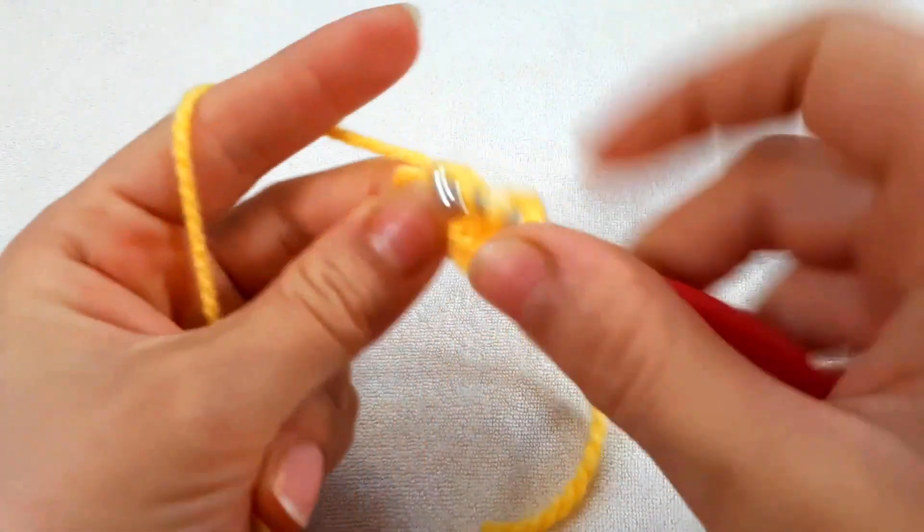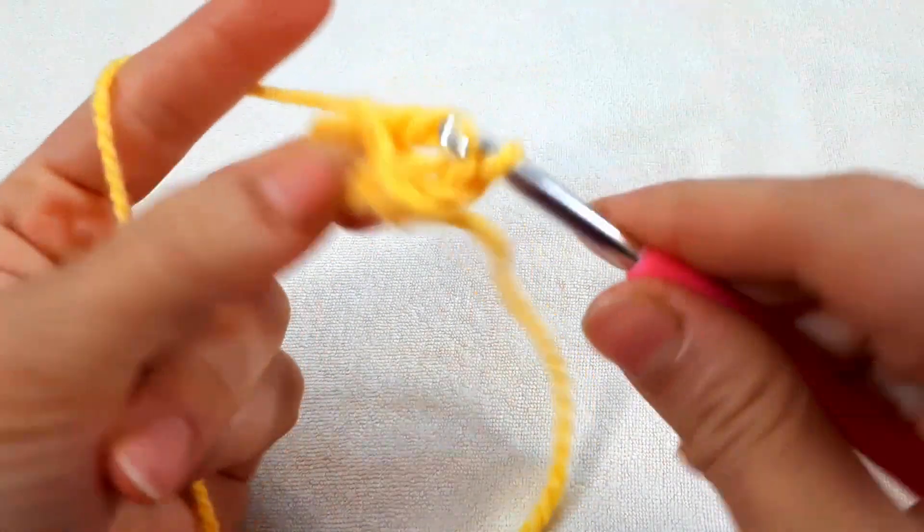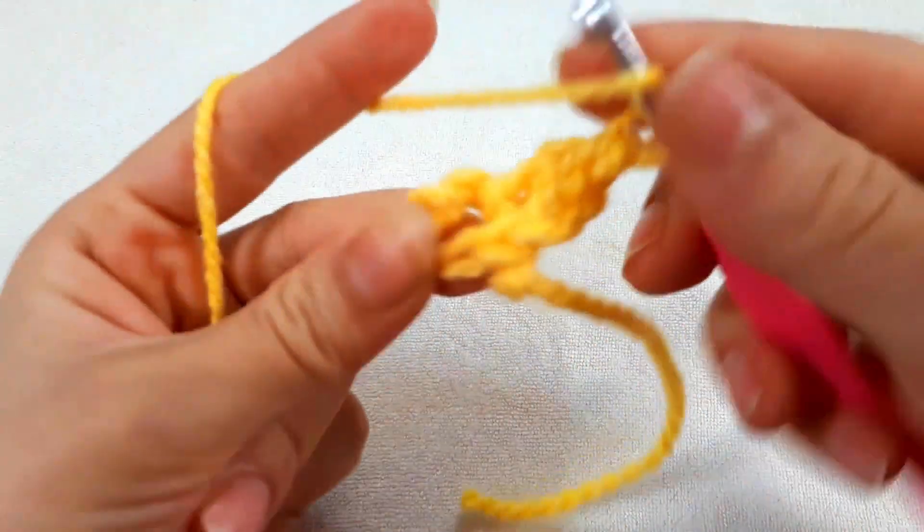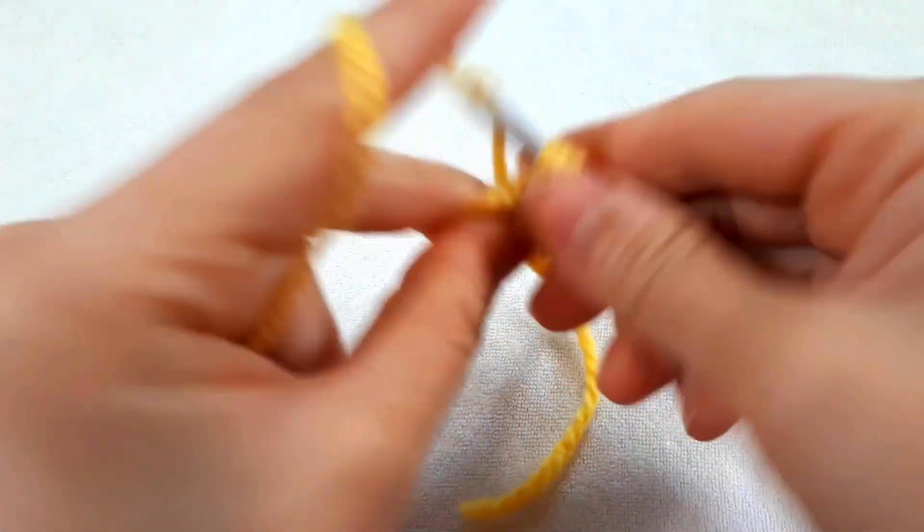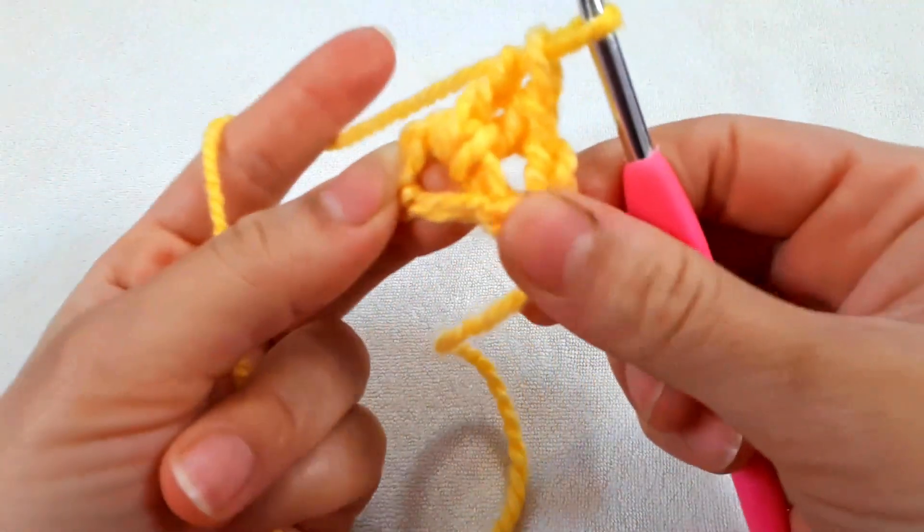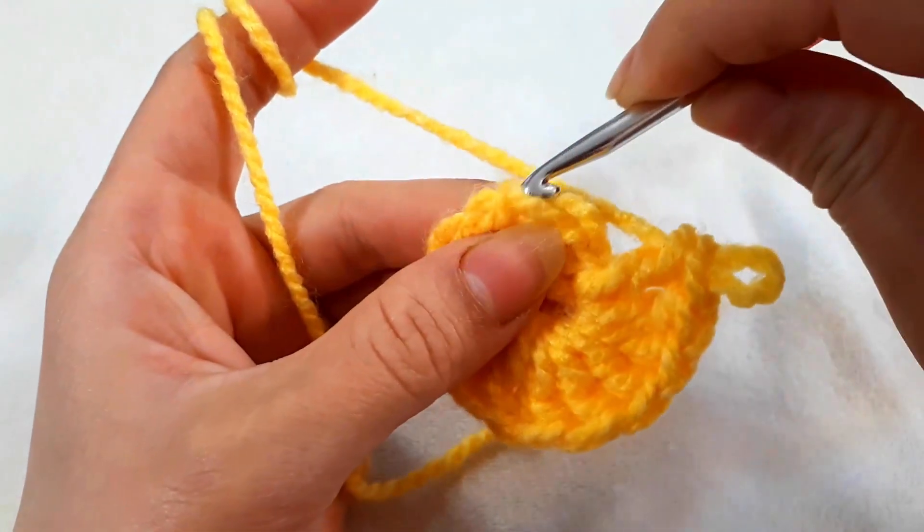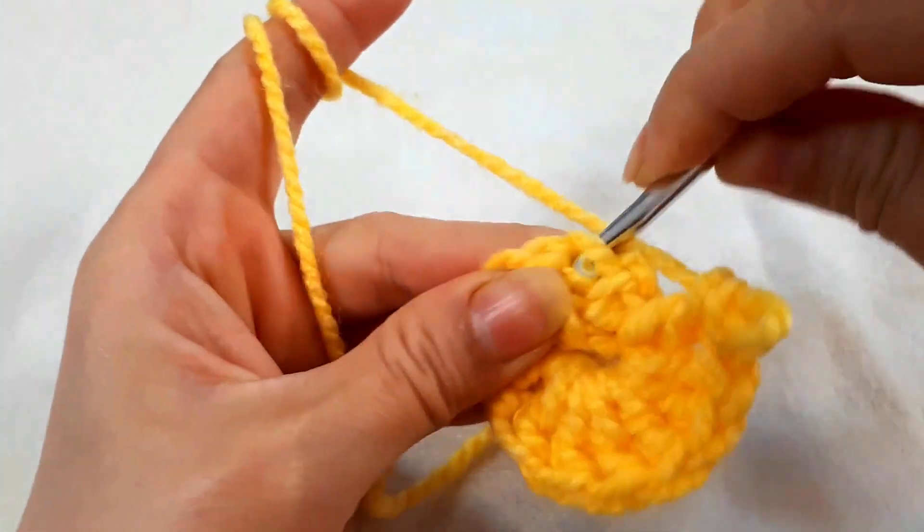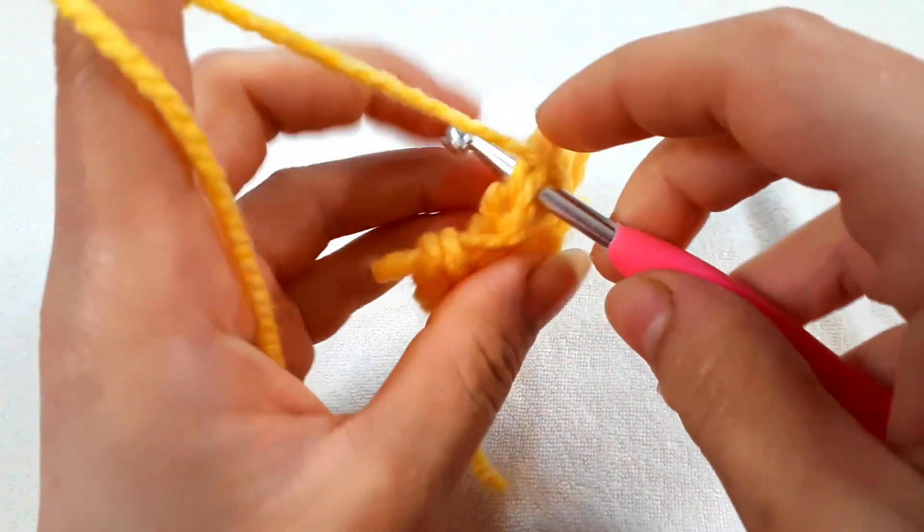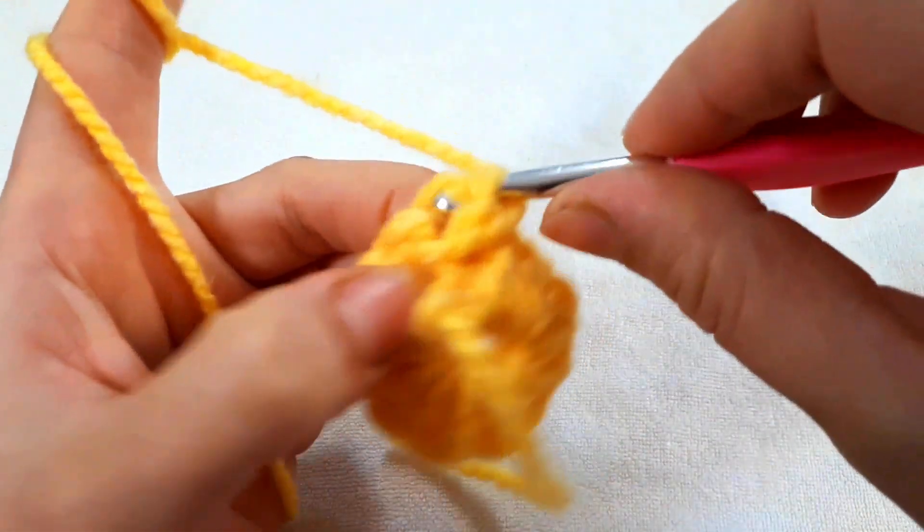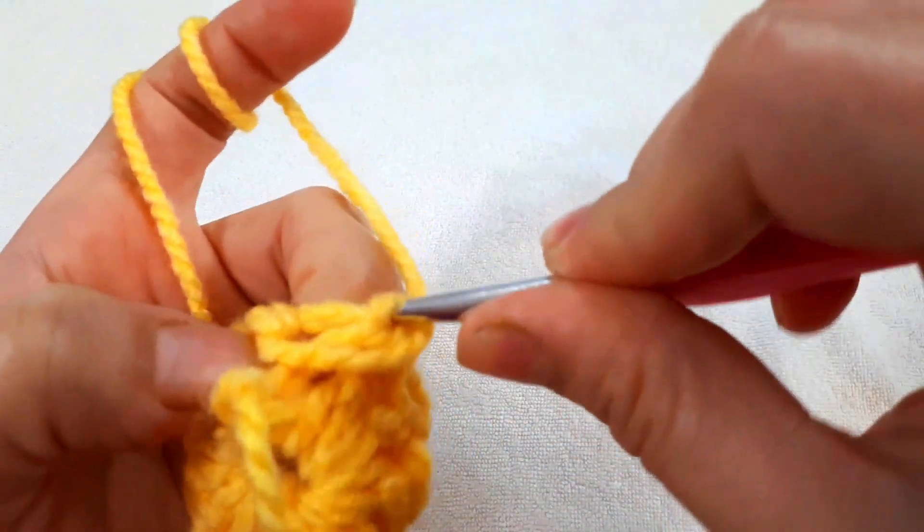Into the circle. Make a slip stitch and finish row one.